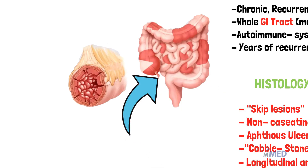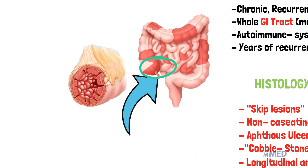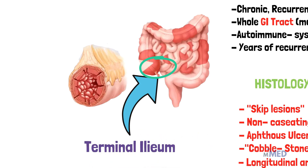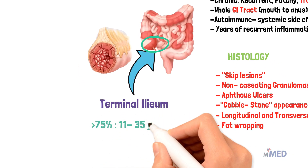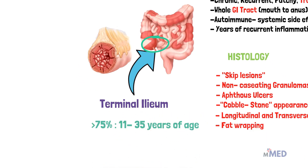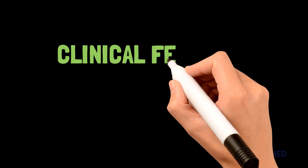Crohn's disease can affect the whole GI tract from mouth to anus, but the terminal ileum is the most common site. More than 75% of cases develop in people aged 11 to 35.